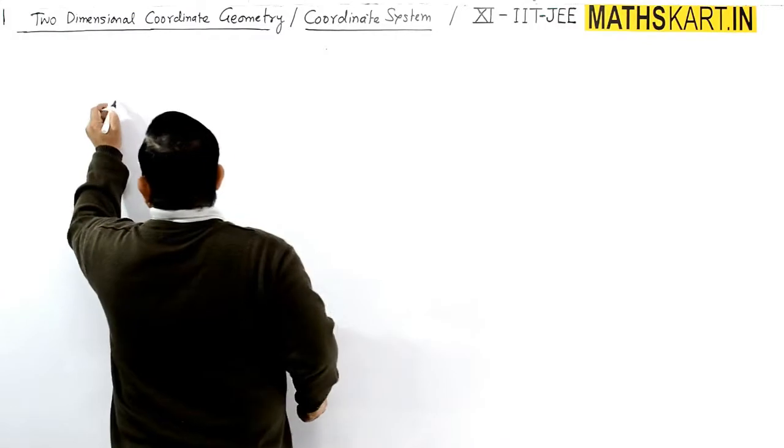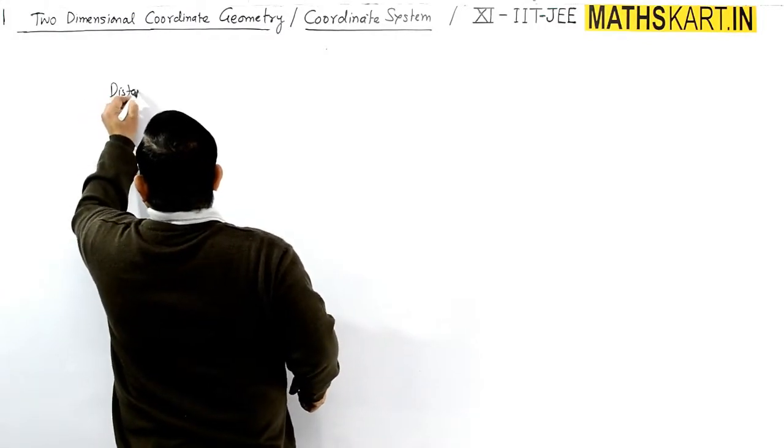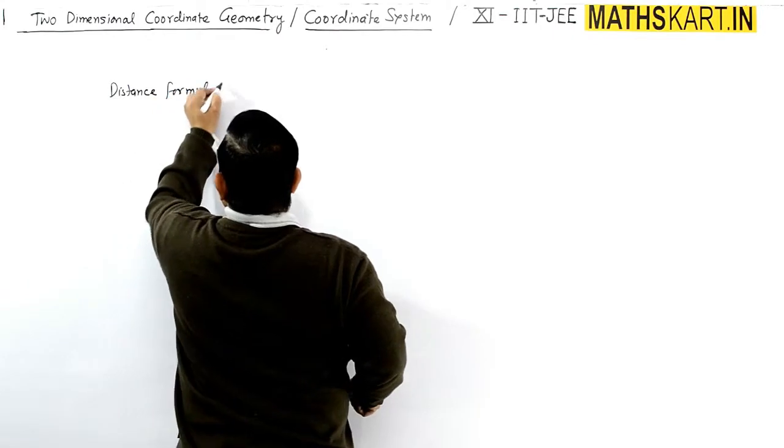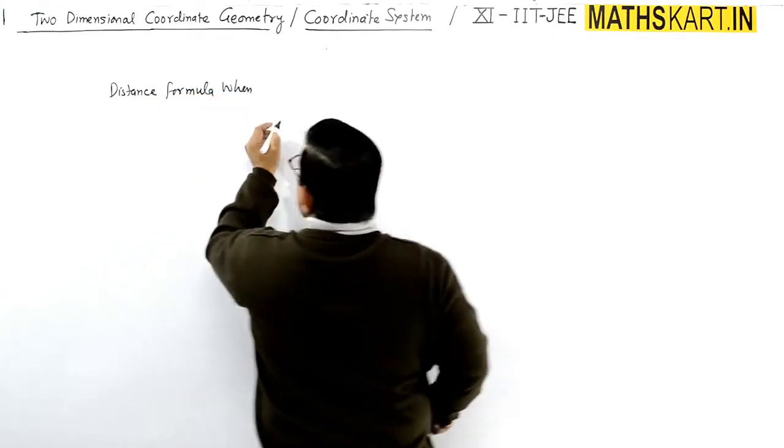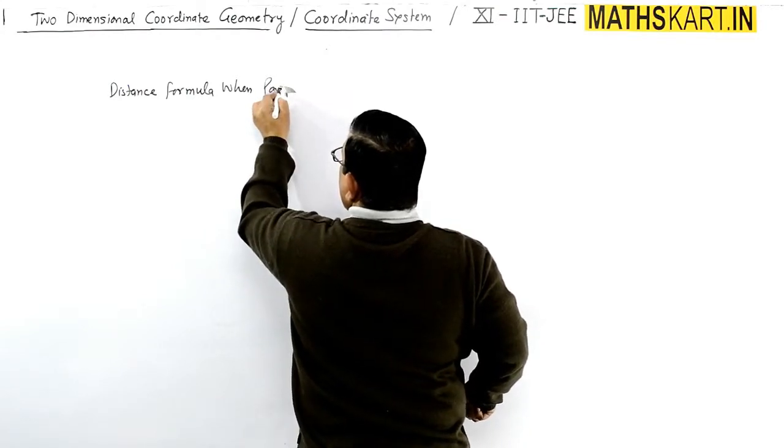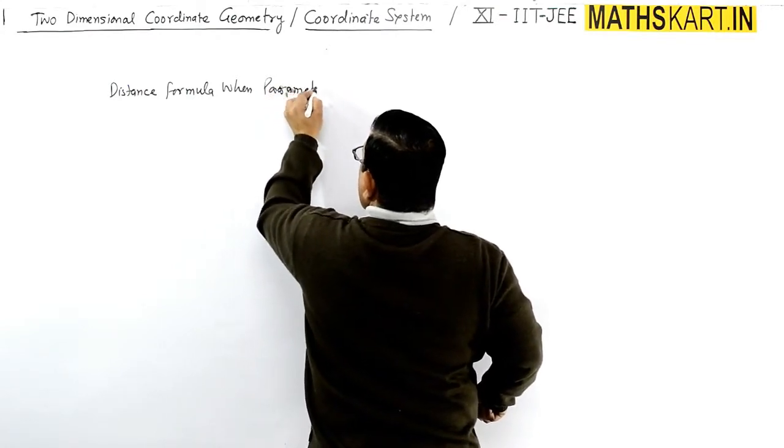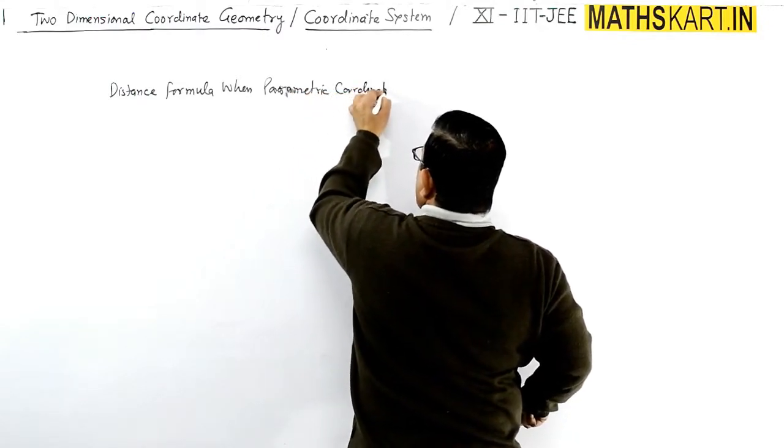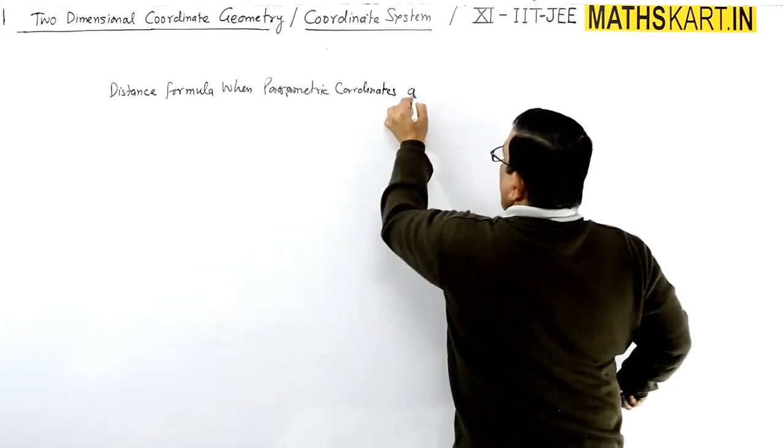Right, so distance formula, distance formula when parametric coordinates are given, parametric coordinates are given.